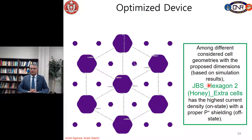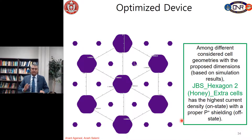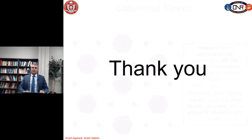Among all considered cell geometries with the proposed dimensions based on simulation results — 2 micrometer width of the emitter cells and 2.5 micrometer distance between them — the JBS hexagon type 2 or honeycomb structure with extra cells of only 0.5 micrometer width at the middle has the highest current density in the on-state with proper P+ shielding in the off-state. When designing a mask for any power device, you need to consider both on-state and off-state. For example, if you only think about the on-state, you may conclude that circles have the best result, but circles are not a good design without extra cells. Thank you very much for your attention.